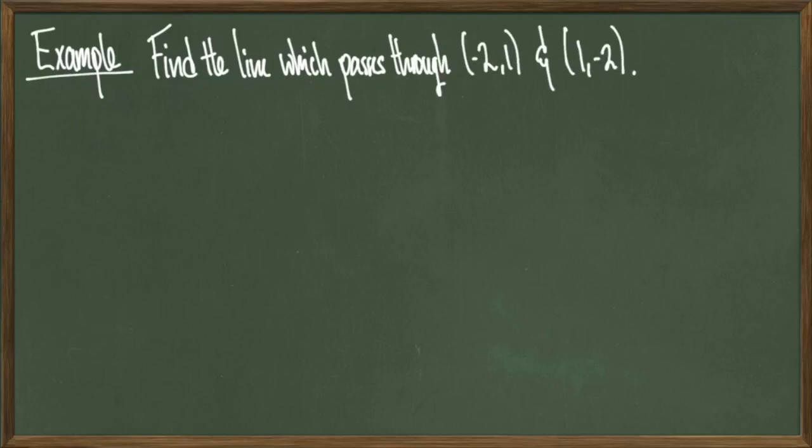For our next example, we're going to build a line. We're going to find a line that passes through the points negative 2, 1, and 1, negative 2. So like I said before, we need two pieces of information when we're building a line. We need a slope, and we need a point it goes through. But here we have two points. So the question is, what do we do?